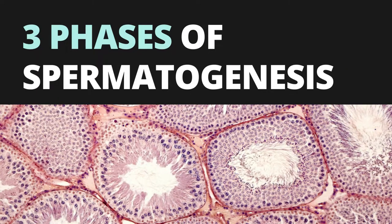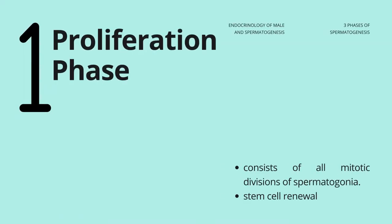The process of spermatogenesis can be subdivided into three phases. The first is the proliferation phase, which consists of all mitotic divisions of spermatogonia. Several generations of A spermatogonia undergo mitotic divisions, generating a large number of B spermatogonia. Stem cell renewal is an important part of the proliferation phase.